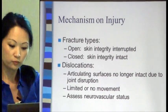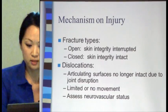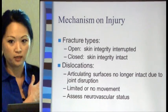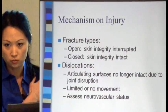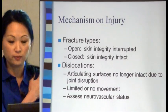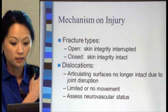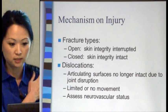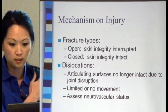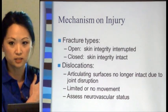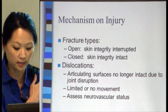When you see someone with a dislocation, typically you'll see them with limited to no movement — for example, if they dislocated their shoulder. With dislocations, your assessment is the same: you're checking neurovascular status.